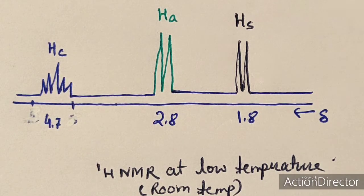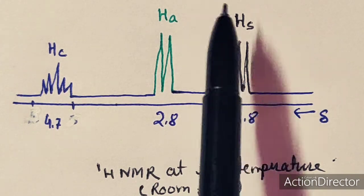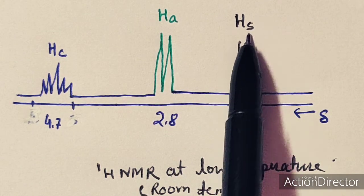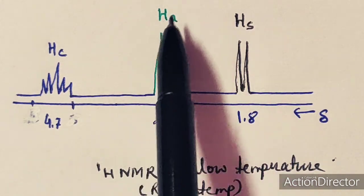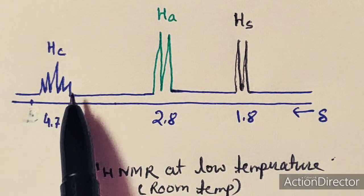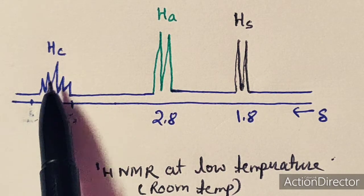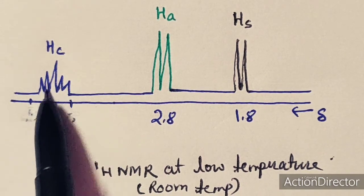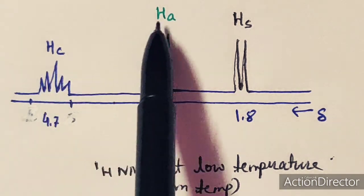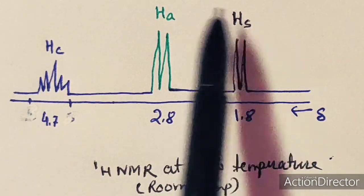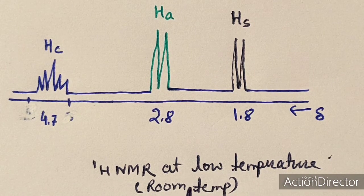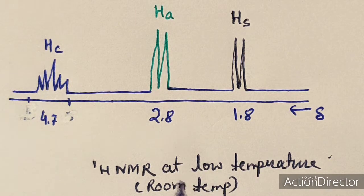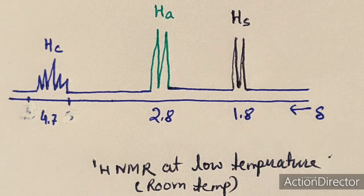One doublet is due to the hydrogen atoms syn to the metal center, the other doublet is due to the hydrogen atoms anti to the metal center, and the quintet has five peaks together, arising from the central hydrogen atom coupling with both HA and HS. This is the 1H NMR spectra of the molybdenum compound at room temperature.